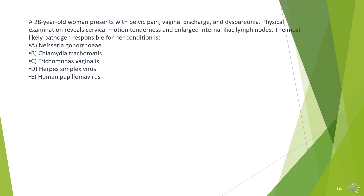A 28-year-old woman presents with pelvic pain, vaginal discharge, and dyspareunia. Physical examination reveals cervical motion tenderness and enlarged internal iliac lymph nodes. The most likely pathogen responsible for her condition is which of the following?